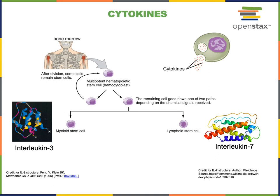Cytokines are also produced by other cells — your adipose tissue and the cells in your liver and skeletal muscles can all secrete cytokines as a way of regulating the functions of leukocytes in the immune system. There are many specific cytokines, but all are glycoproteins, and most are involved in regulating the immune system by binding to receptors on the surface of leukocytes.